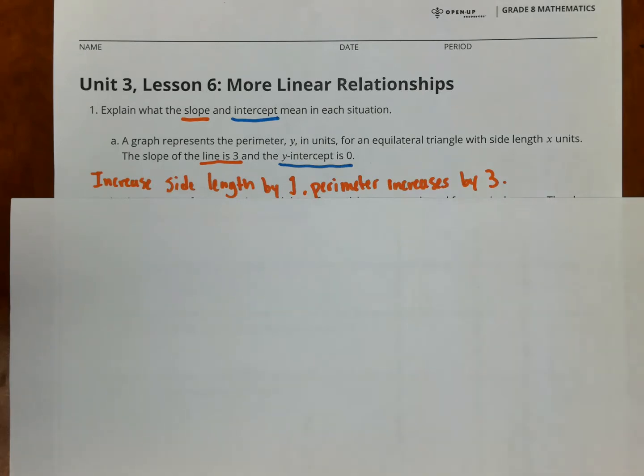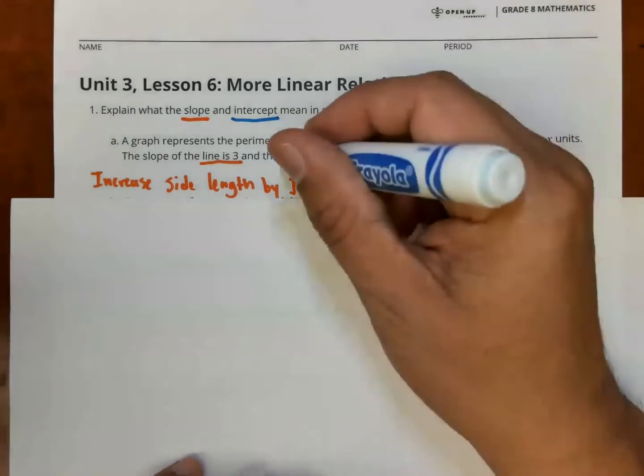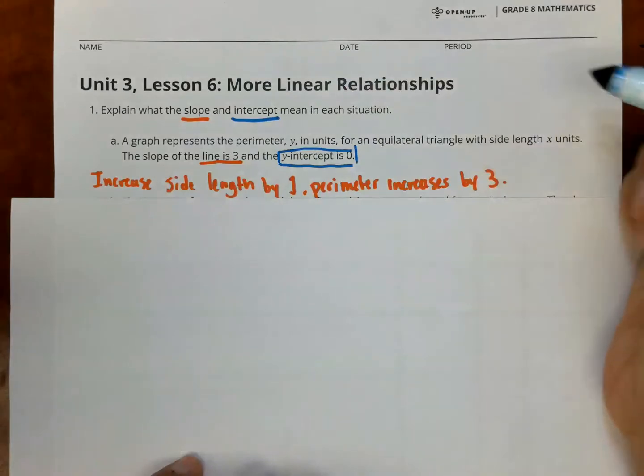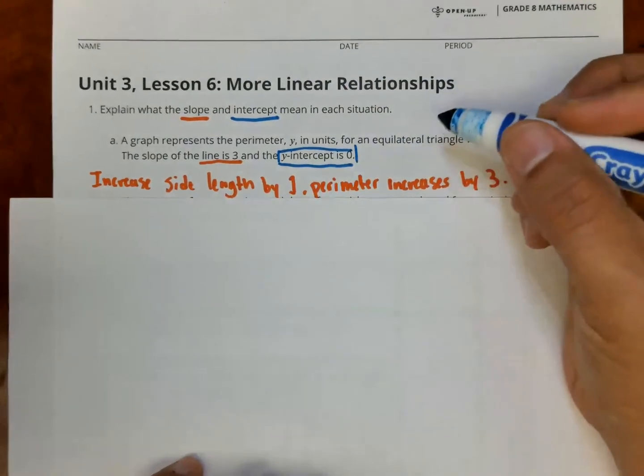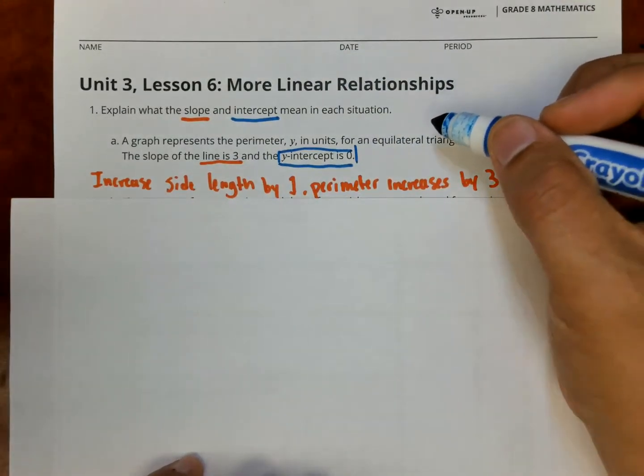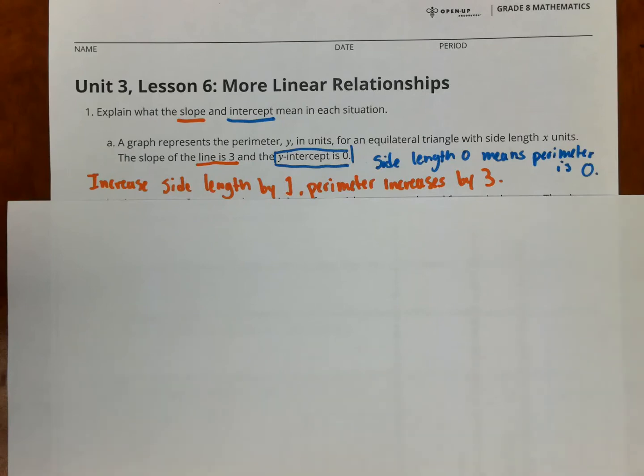Now the y-intercept is 0. What does that mean here in this problem? The y-intercept being 0 means that when you start doing the perimeter, if the side length is 0, then there is no perimeter. The perimeter is 0. So that's really what it means here. This is a special case because the y-intercept is 0. This also means that the graph is going to start at 0. If the side length is 0, then the perimeter is 0.